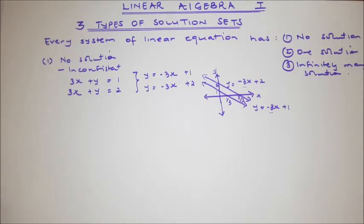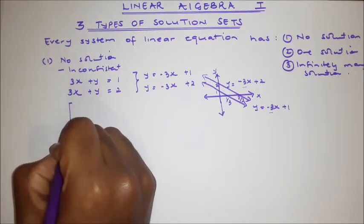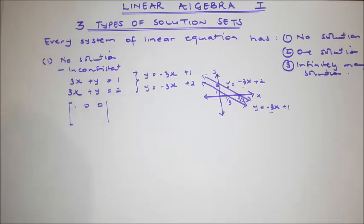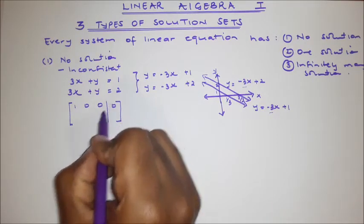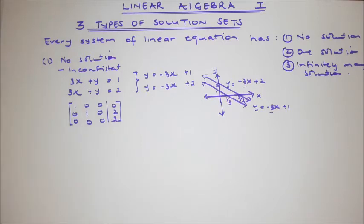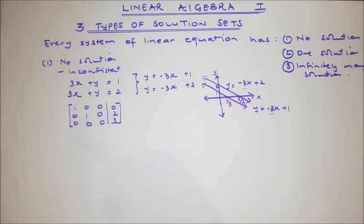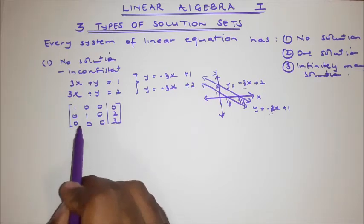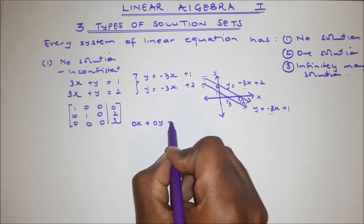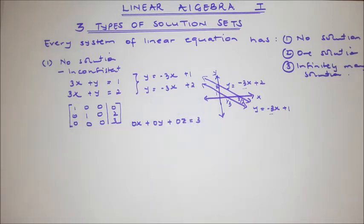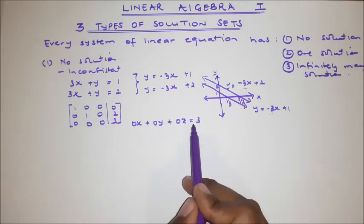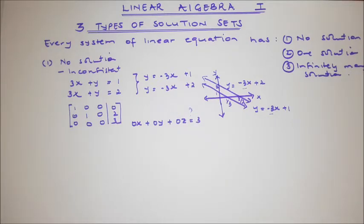There is no way they will meet, and hence the system is inconsistent. Let's say you were working with matrices and solving using reduced row echelon form. If you reached a point like this — a matrix with a row of all zeros on the left but a non-zero value, say 3, on the right — this would be like saying 0x plus 0y plus 0z equals 3. This is impossible because multiplying by 0 on the left must give 0 on the right. So this system is inconsistent.